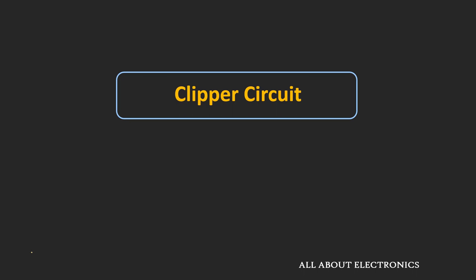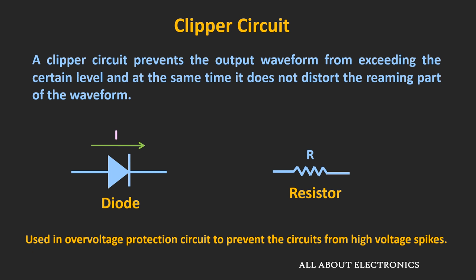Hey friends, welcome to the YouTube channel All About Electronics. In this video, we will learn about the Clipper Circuit. The Clipper Circuit prevents the output waveform from exceeding a certain level, and at the same time, for the AC signal, it does not distort the remaining part of the waveform. These Clipper circuits are used in over-voltage protection and wave shaping circuits.